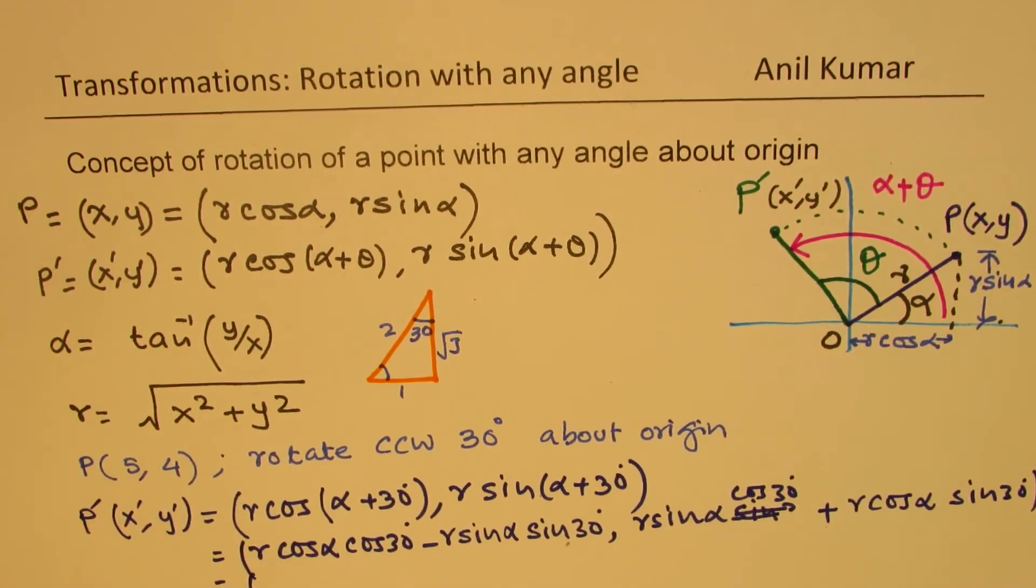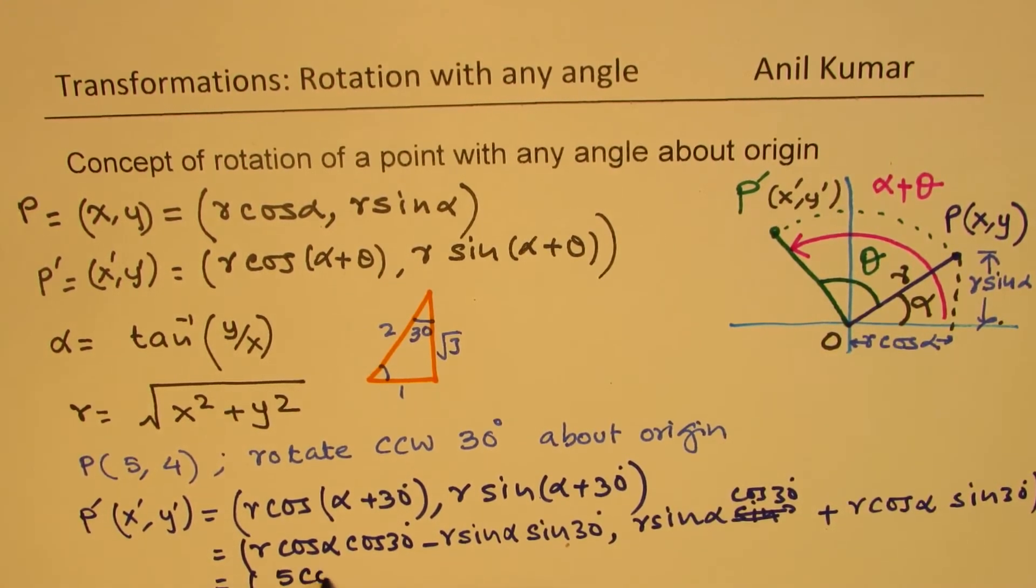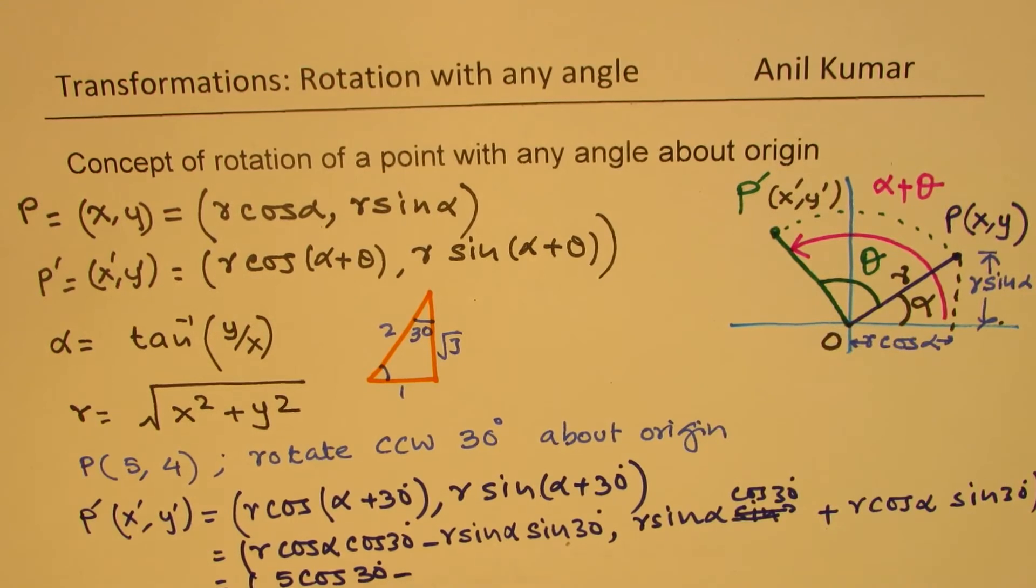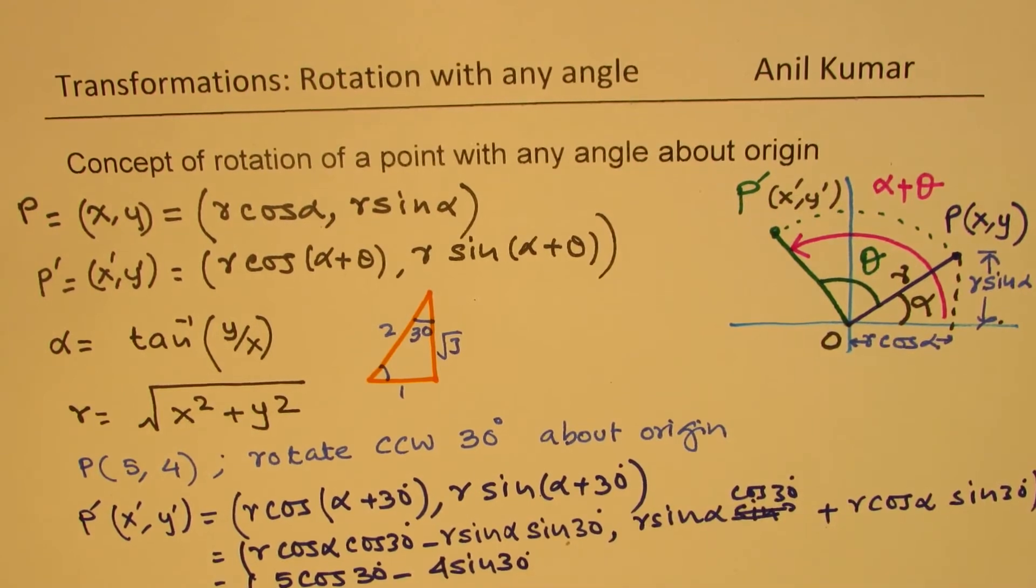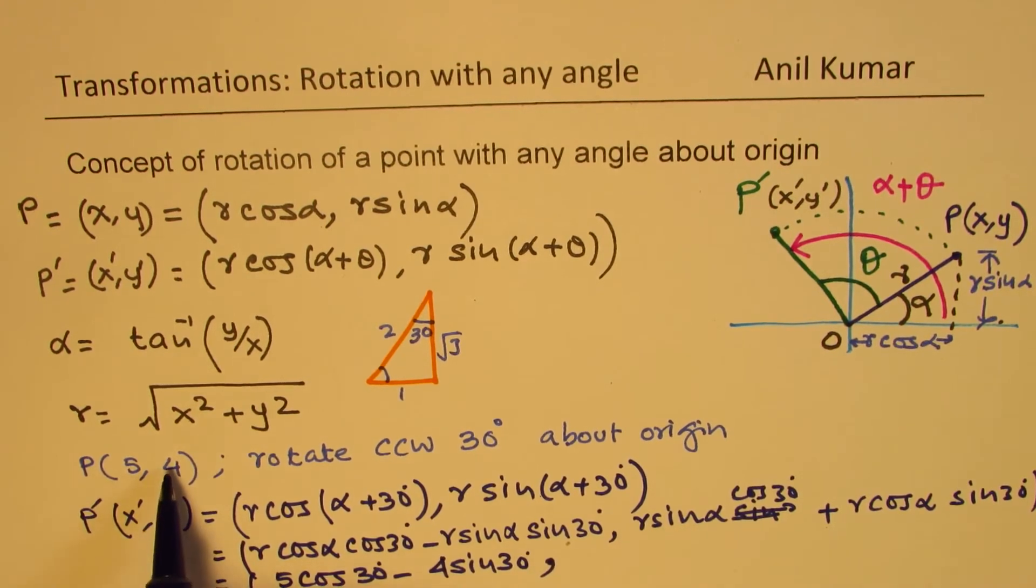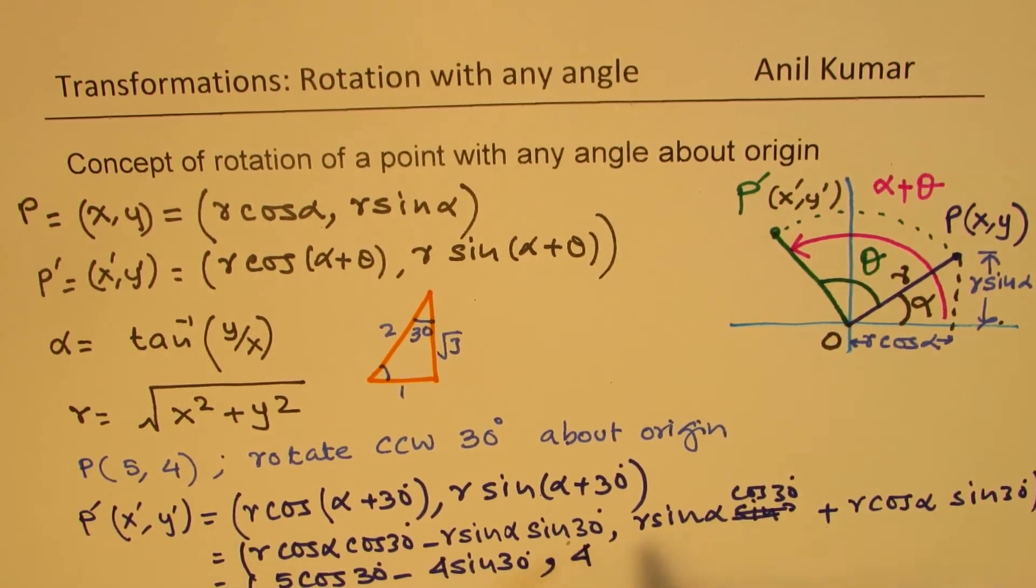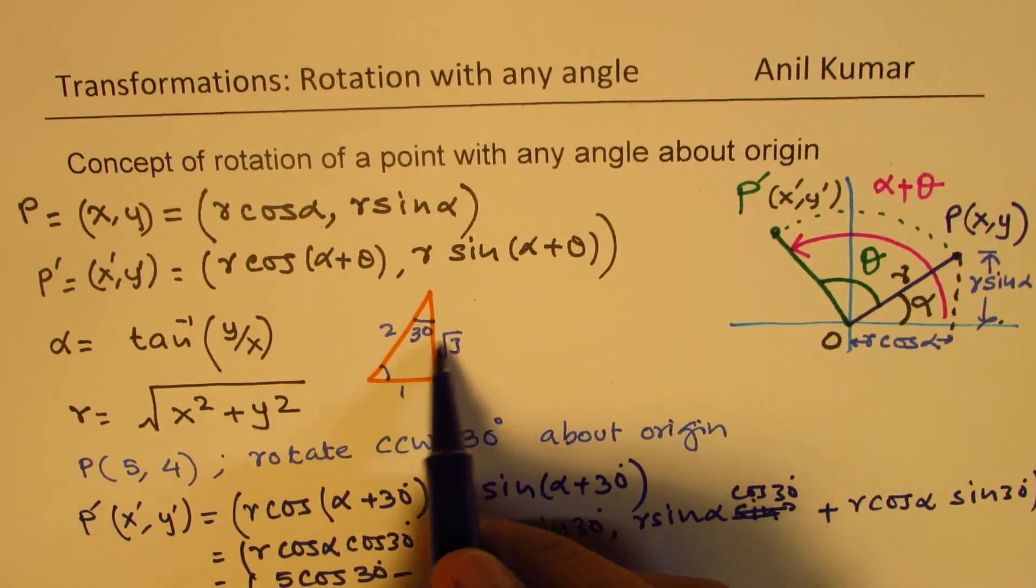Now in this formula, you can clearly see that r cos alpha is the x-component, which is 5 in this case. So we get 5 cos 30 degrees minus, this is 4, 4 sine 30 degrees. So that becomes the x-value. The y-value will be r sine alpha, which is basically 4. So 4 cos of 30 degrees, which is square root 3 over 2.